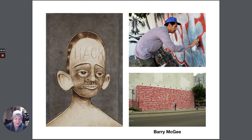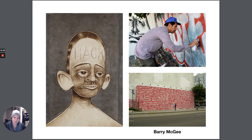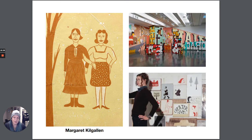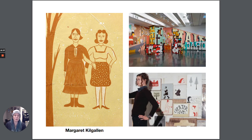Barry McGee is another artist pretty famous for both freehand tagging and wild style writing, but he also does some wheat paste and more commercial-looking work for galleries. Margaret Kilgallen, who died rather young, is an artist who also did work with wheat paste and created really very illustrative type works with a lot of text used in the work.